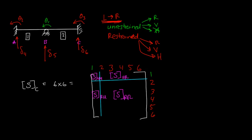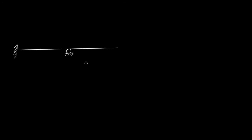Let me do one more example — a different one. What if we had a beam that was fixed on one side, fixed on the other side, and there was a roller in the middle? This is an indeterminate structure with element one and element two. If we apply some load, our deformed shape is going to look something like this.